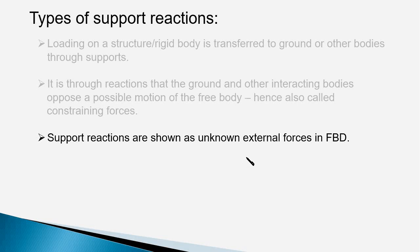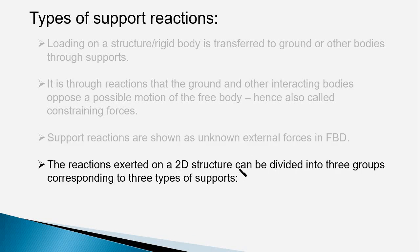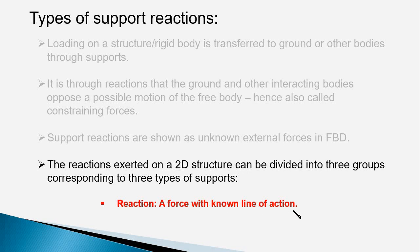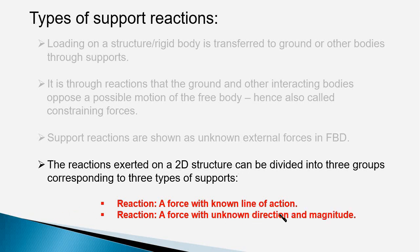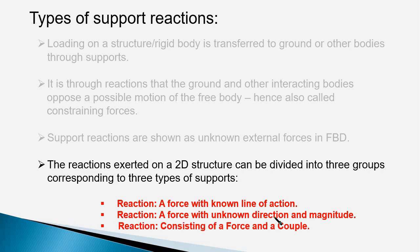We show both unknown and known external forces in the free body diagram. The unknown external forces are usually the support reactions. There are three types of reactions exerted on a 2D structure. The first kind is a force with known line of action — the direction is known but the magnitude is unknown. The second type is a force with unknown direction and unknown magnitude, giving two unknown entities. The third type is a combination of a force and a couple.